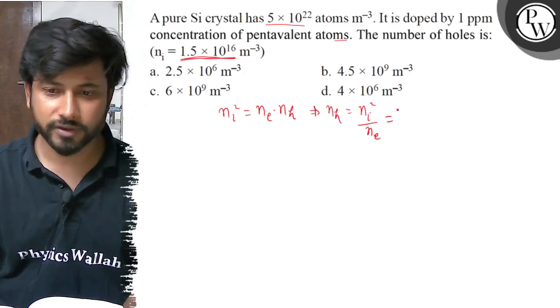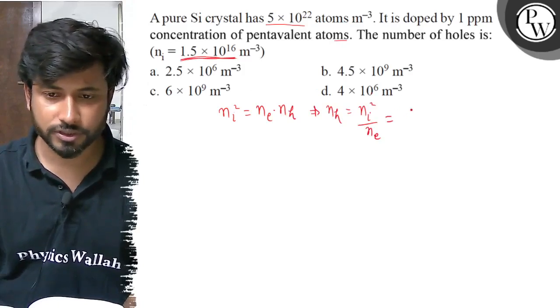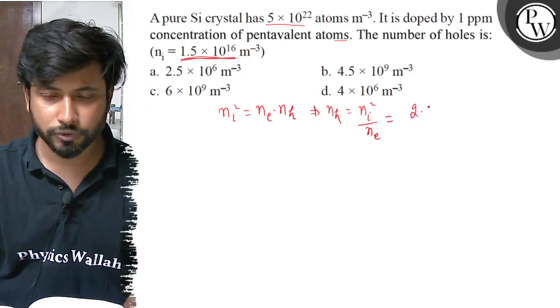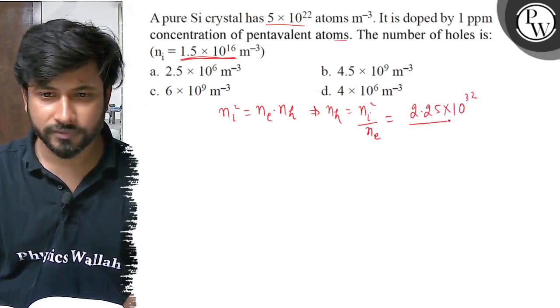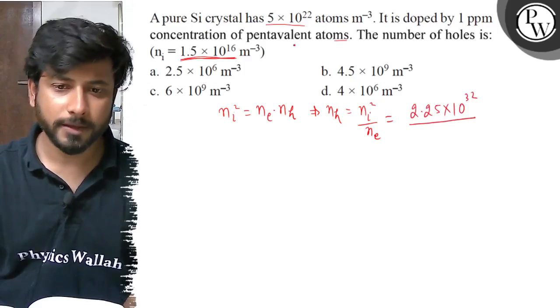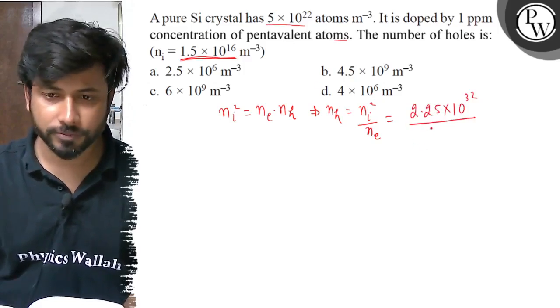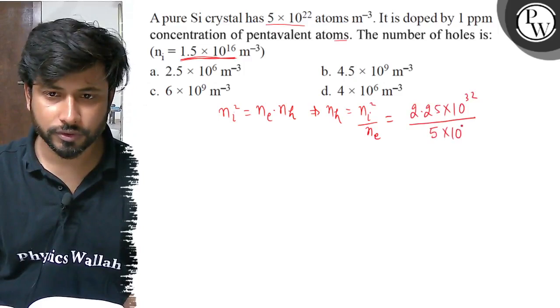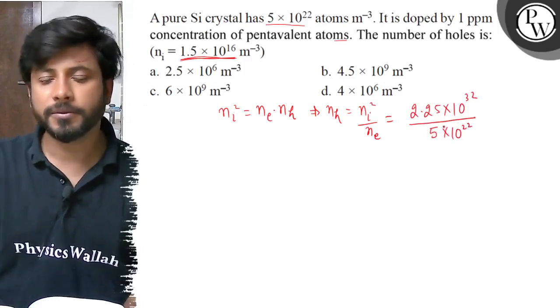Intrinsic carrier concentration 1.5 × 10¹⁶, we say, and it's squared, so 2.25 × 10³² divided by 5 × 10²² atoms per meter cubed.